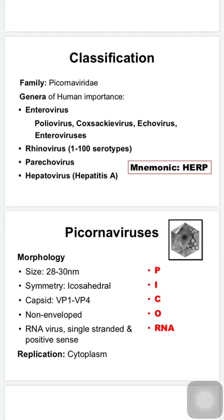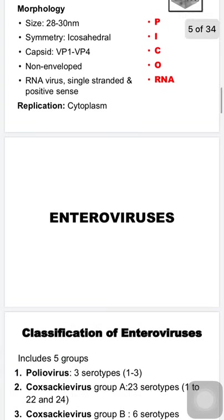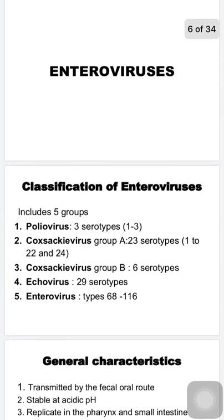The capsid proteins VP1 and VP4 are key to remember. It is a non-enveloped virus with a single-stranded, positive-sense RNA genome. Replication occurs in the cytoplasm of the host cell. Most RNA viruses replicate in the cytoplasm — the two exceptions are orthomyxovirus and retrovirus.